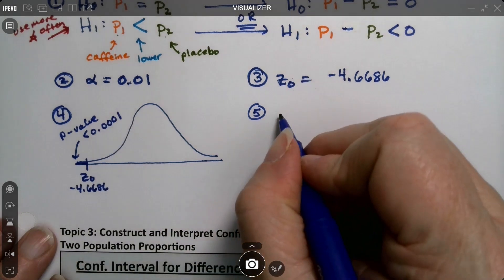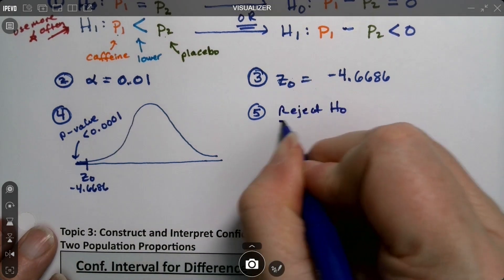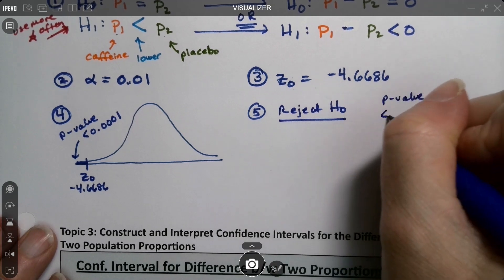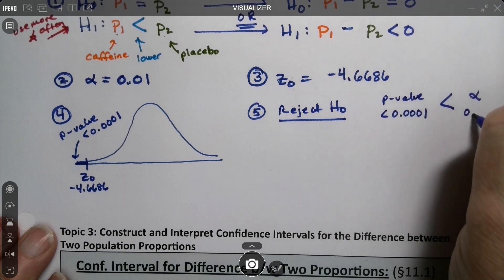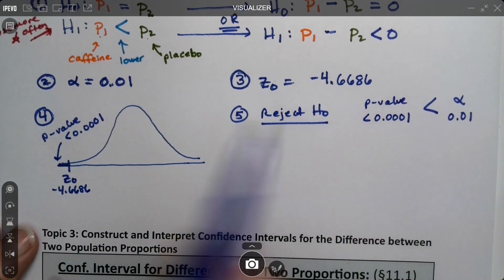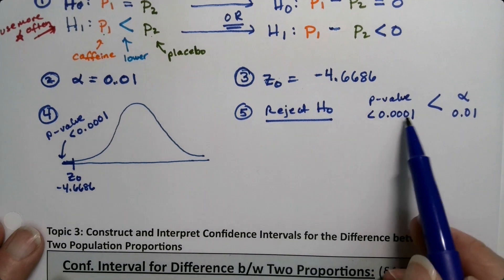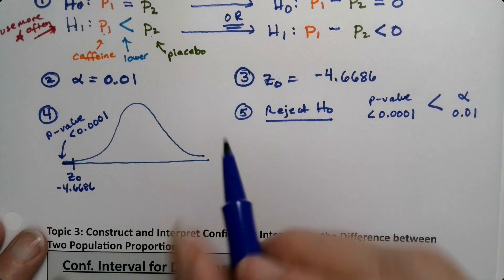And our alpha is 0.01 and whatever this p-value is, it's definitely lower than that because we are going to reject H0 for sure because our p-value which is less than 0.0001 is less than our alpha which was 0.01. We don't know what this number is but we know it has a ton of zeros in it and a ton of zeros is less than just one zero.